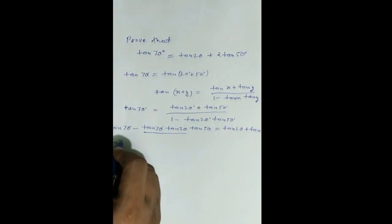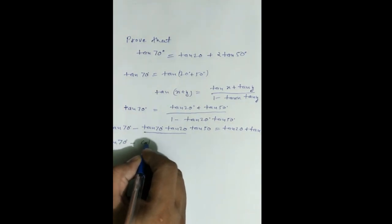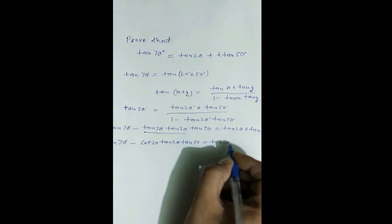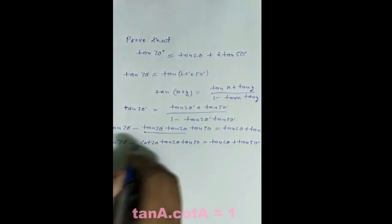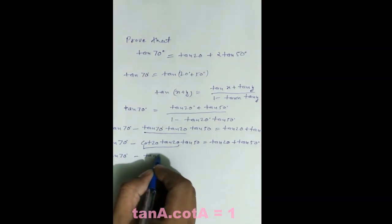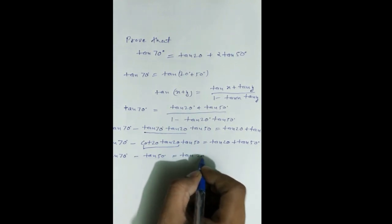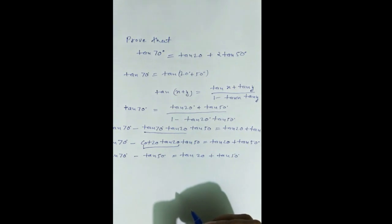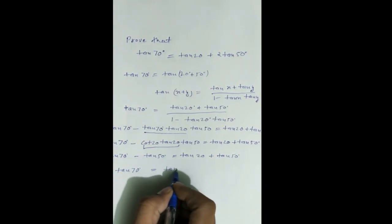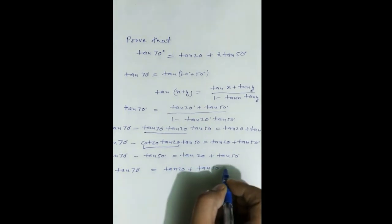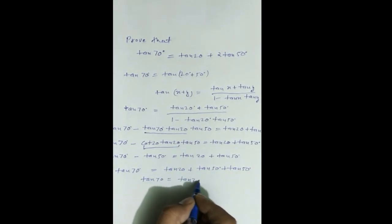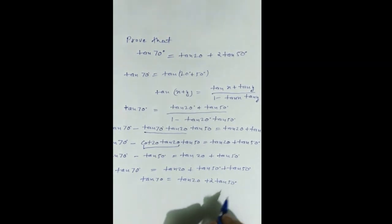Now change tan(70°) and tan(20°)·tan(70°) minus tan(70°) is equal to tan(20°)·tan(50°). Since tan(20°)·tan(50°) equals 1, then tan(70°) minus tan(50°) equals tan(20°) plus tan(50°). Shifting tan(50°) to the right side: tan(70°) equals tan(20°) plus twice of tan(50°). Hence proved.